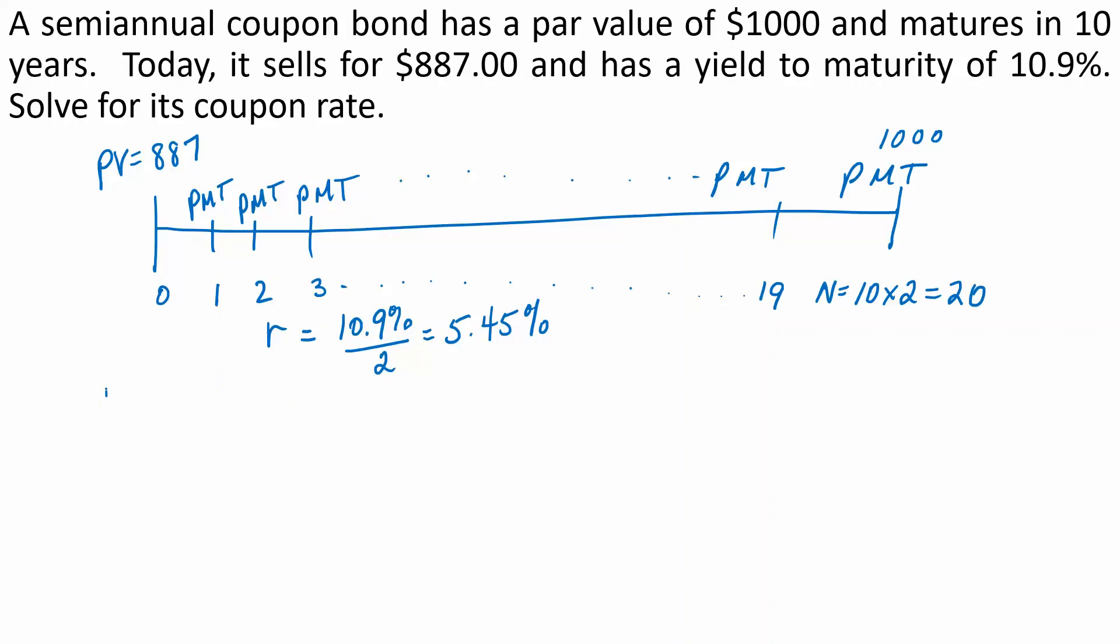One method would be using the calculator. In your time value of money solver, you would put in 20 for the number of periods and 5.45 for the interest rate.